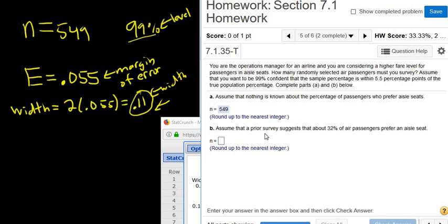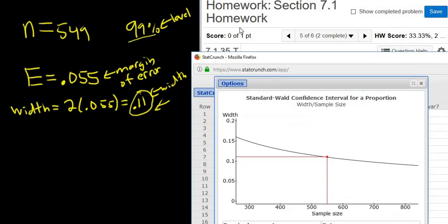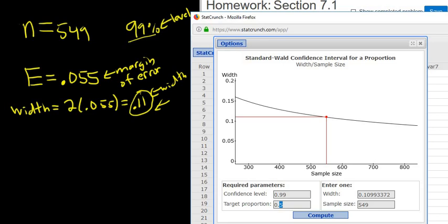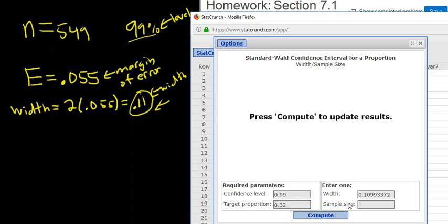Assume that a prior survey suggests that about 32% of air passengers prefer an aisle seat. So now we have some information. Now we know that there is a 0.32 probability that someone will prefer an aisle seat. So we have to go back in here, change this to 0.32, change the target proportion.